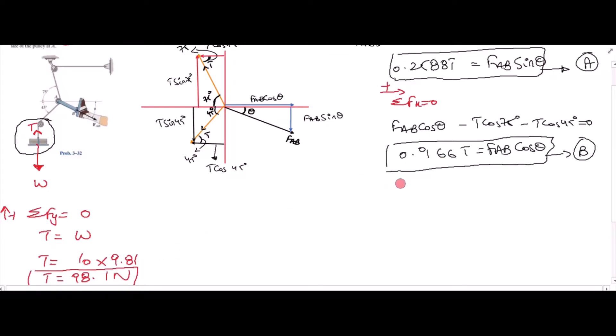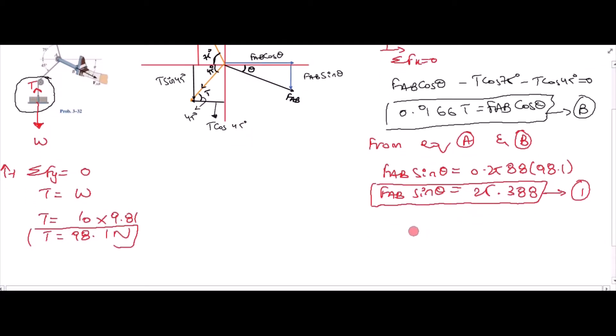So I can replace T with 98.1 in both equations. From equation A and B, I have FAB sin theta equals 0.2588 into 98.1. FAB sin theta is equal to 25.388. Let's call this equation 1. From equation B, I have FAB cos theta equal to 0.966 into 98.1. FAB cos theta is equal to 94.7646. This is equation 2.